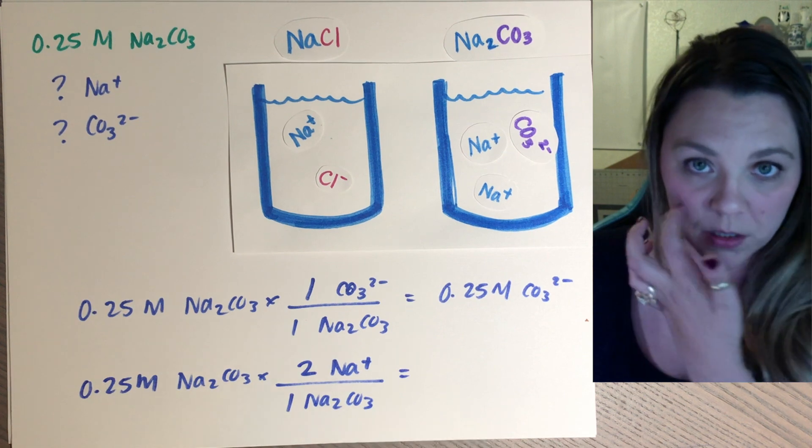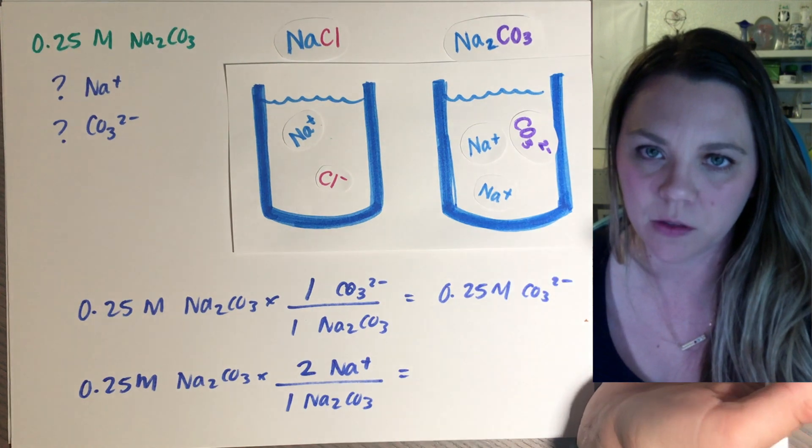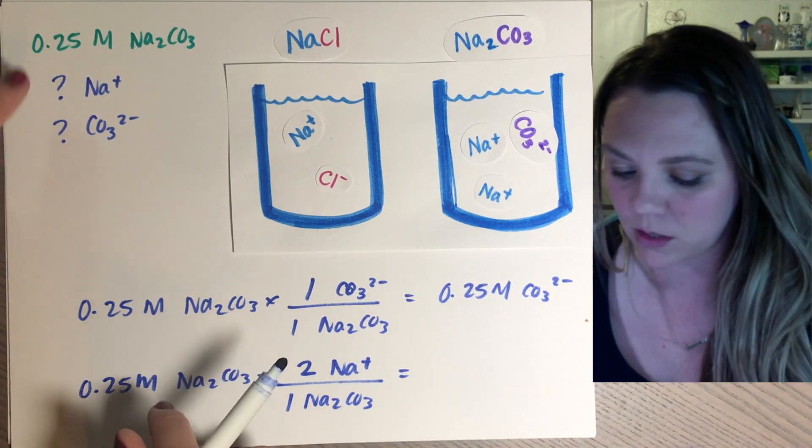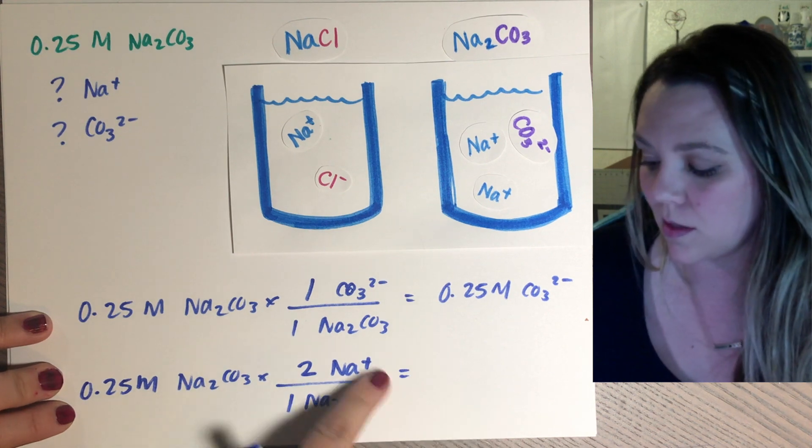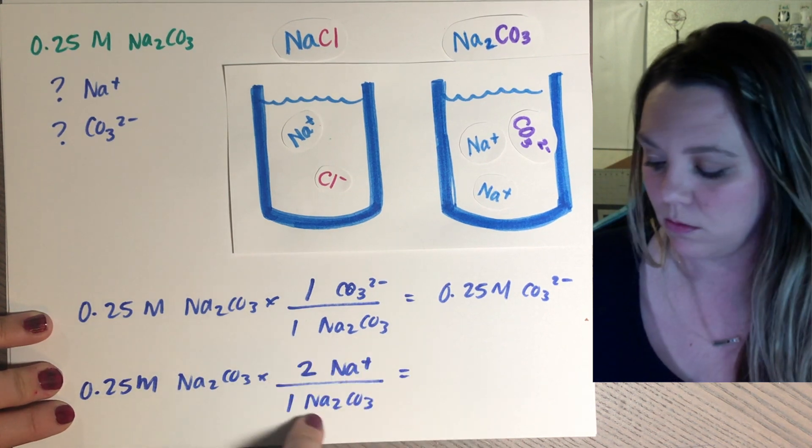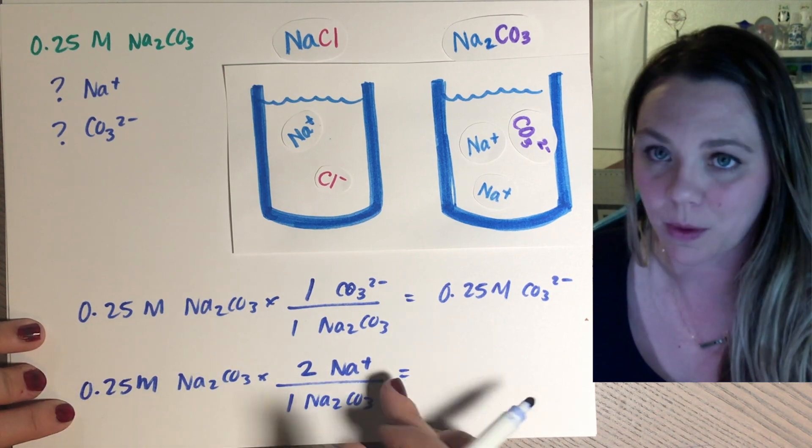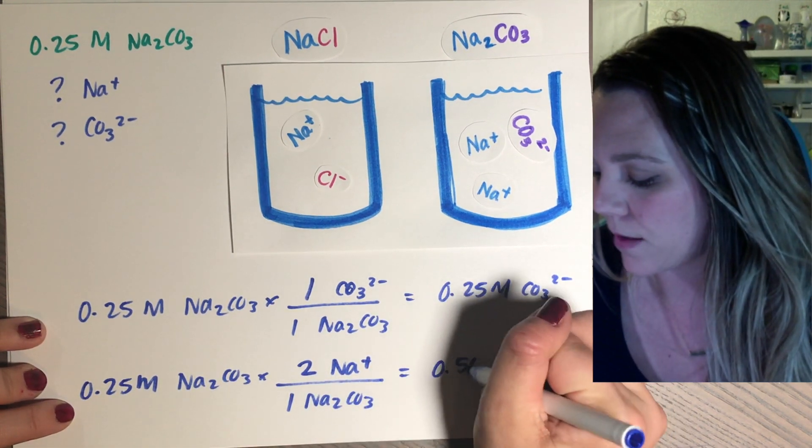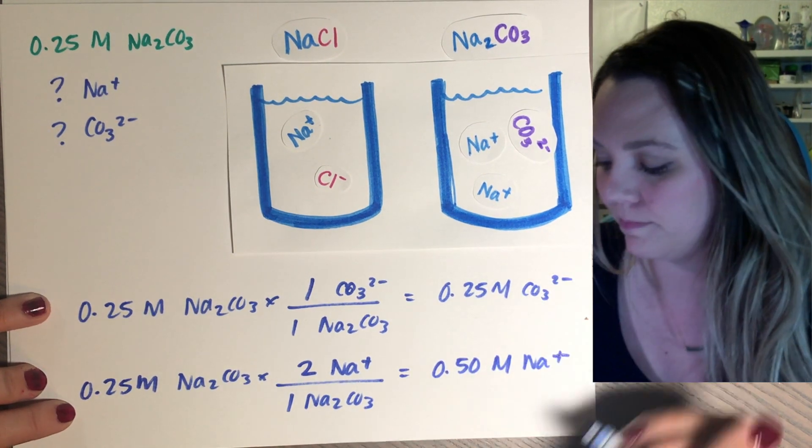So depending on how your teacher likes you to set up the equation, you could literally just look at it and say, aha, it's times two, because there's two sodiums. So you could say 0.25 times two. Or if they actually want you to see it break it down, this is how you'd actually break it down by showing this conversion right here. For every one molecule, there's two sodium ions. So you just multiply by two and you get 0.50 molar Na+.